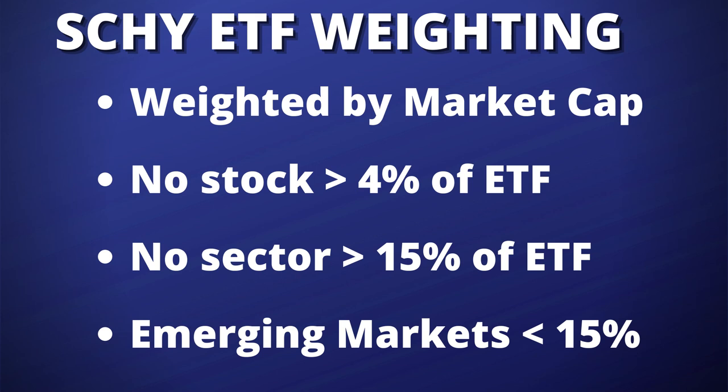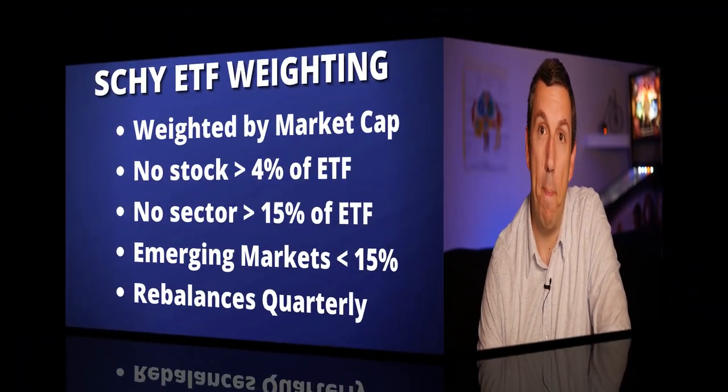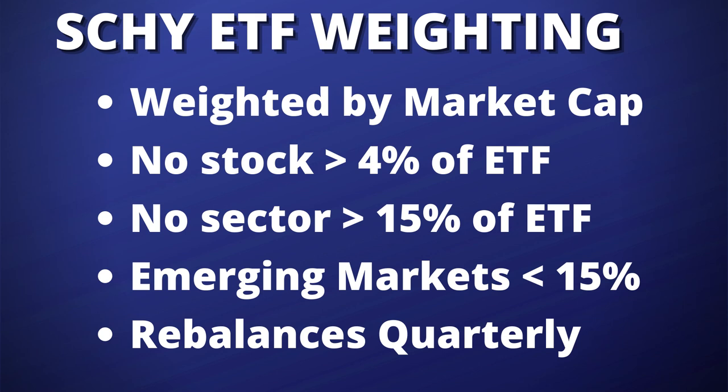The final two rules for SCHY differ from SCHD. First, stocks from countries considered emerging markets are capped at 15% of the ETF. Emerging markets are generally smaller economies — think of developed markets like the US, UK, or most of Europe as your blue chip stocks, and emerging markets as higher-risk, more volatile holdings. Finally, SCHY rebalances quarterly, which is a slight deviation from SCHD, which only rebalances annually.